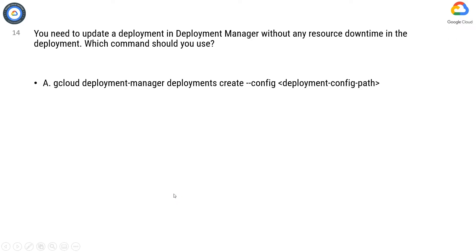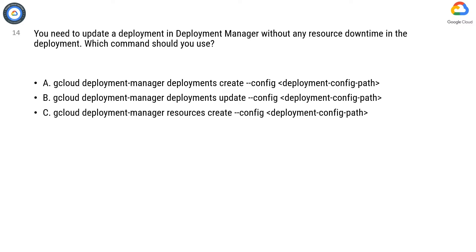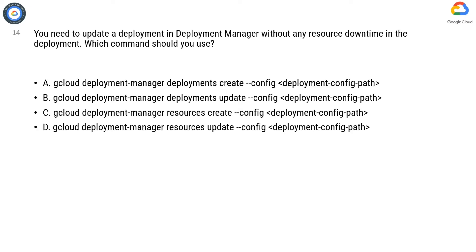Option A: gcloud deployment-manager deployments create --config <deployment-config-path>. Option B: gcloud deployment-manager deployments update --config <deployment-config-path>. Option C: gcloud deployment-manager resources create --config <deployment-config-path>. Option D: gcloud deployment-manager resources update --config <deployment-config-path>.